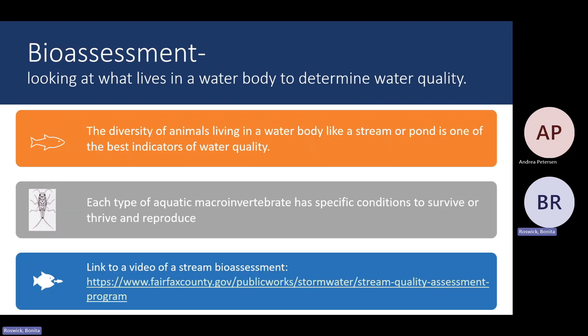When we look at what lives in a water body to determine water quality, we call that a bioassessment. A bioassessment is determined really by the diversity of animals that live in a water body. If you have lots of different things living in a habitat, it usually means it's very suitable for life. Each type of macroinvertebrate has specific conditions that it needs to survive and thrive. Some need really clean water; others can live in water that has low oxygen, warm temperature, or stagnant conditions. Because of those differences, macroinvertebrates are really good at determining water quality.